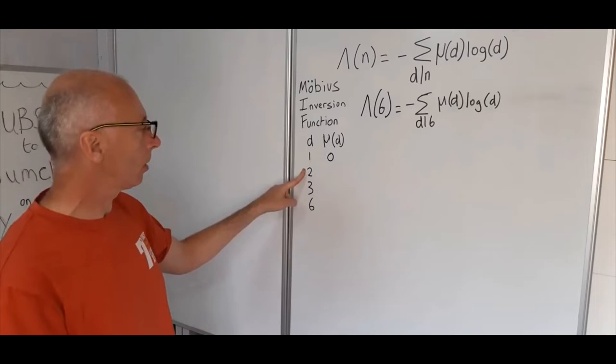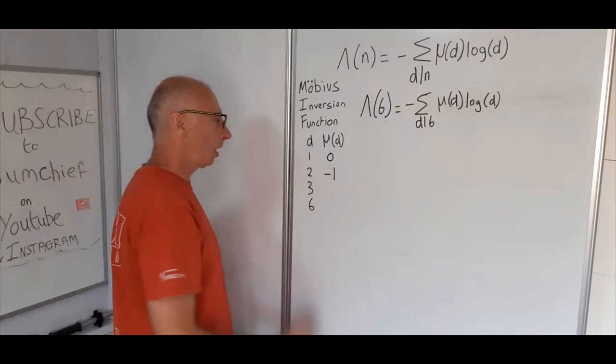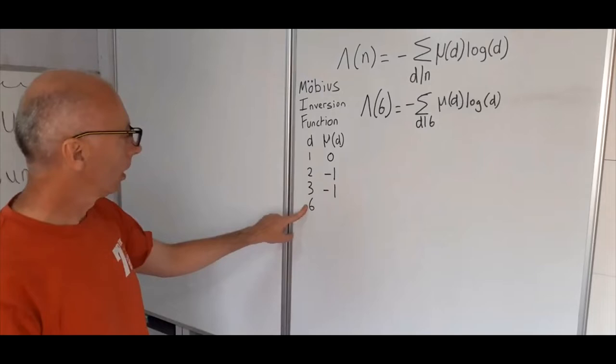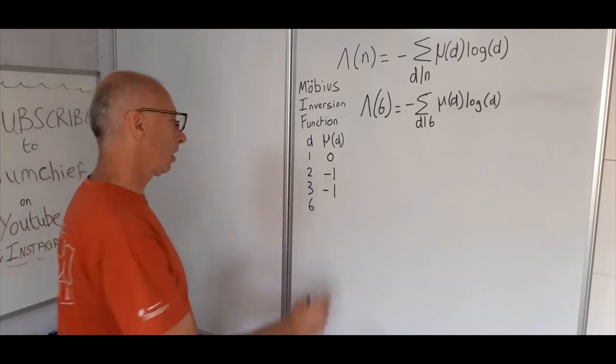2 has 1 prime factor, namely 2. So with an odd number of prime factors, the Möbius function takes the value minus 1. 3 has 1 prime factor, again 3, so the Möbius function takes the value minus 1.